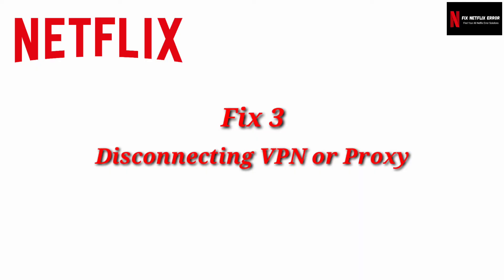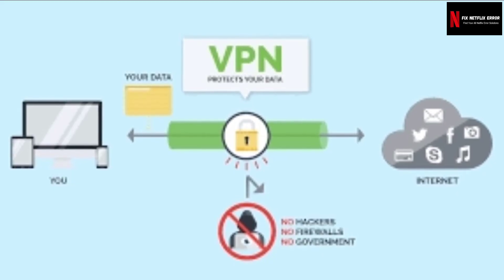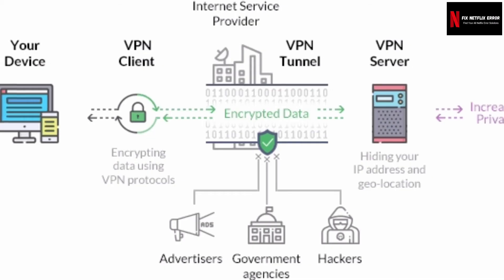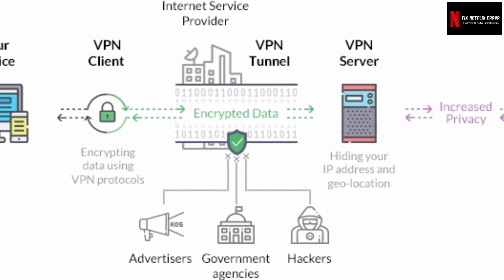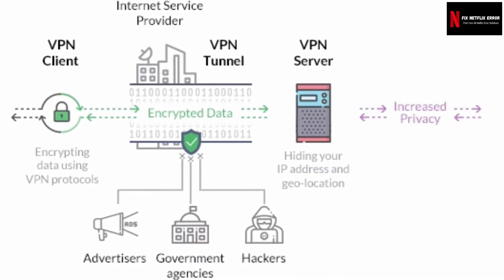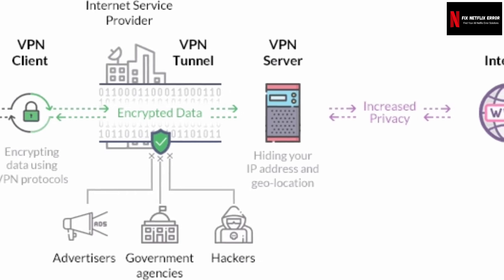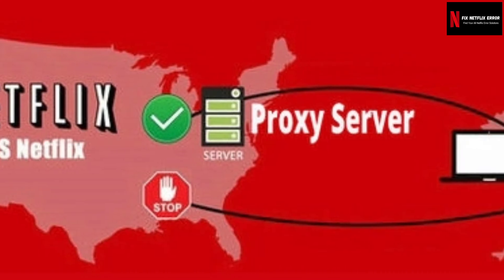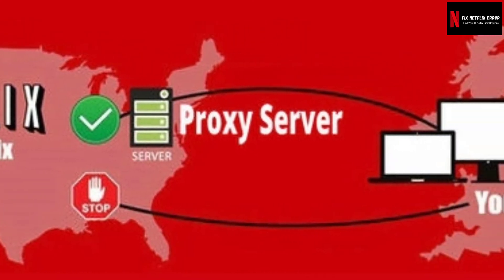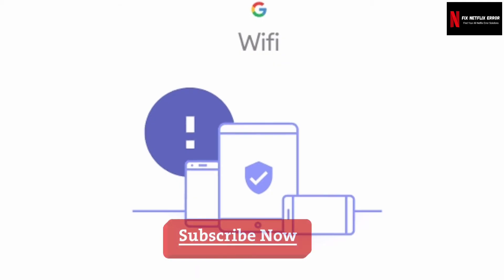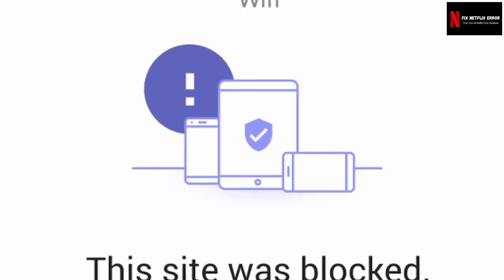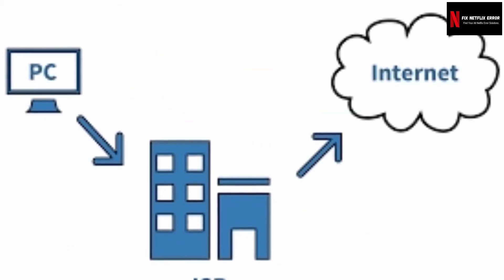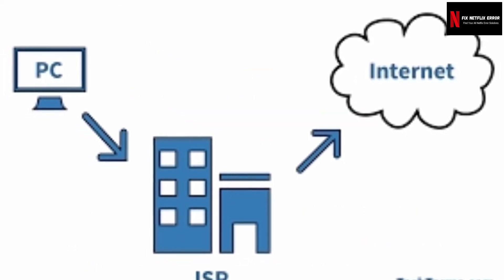Fix 3: Disconnecting VPN or proxy. If you are connected through a virtual private network or proxy server, then disconnect it immediately and try to reach Netflix again. Sometimes if you are linked via another server, the device will have issues linking to the web. The internet speed gets slow, which creates a network interruption while streaming. Netflix prevents their content from users trying to access other regions, so the basic troubleshooting step is to disconnect the VPN and try to reach Netflix again.